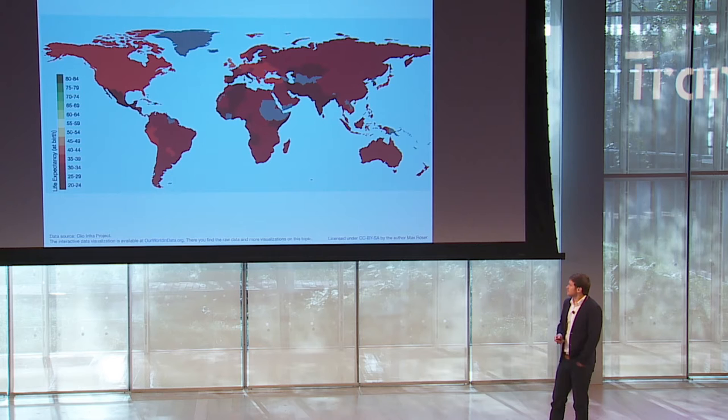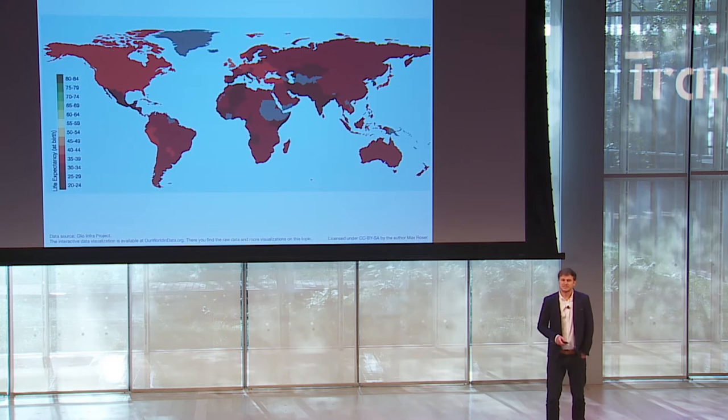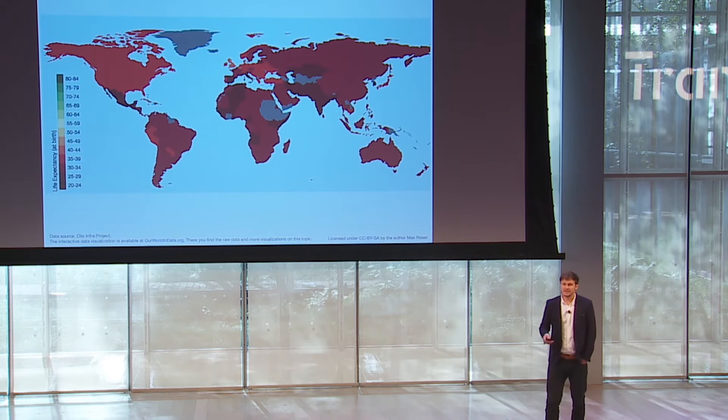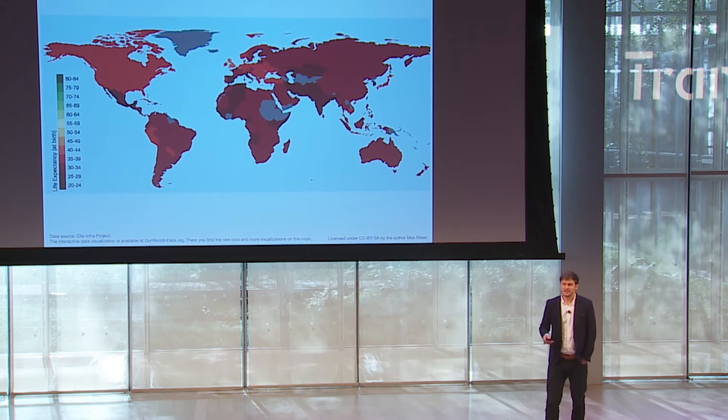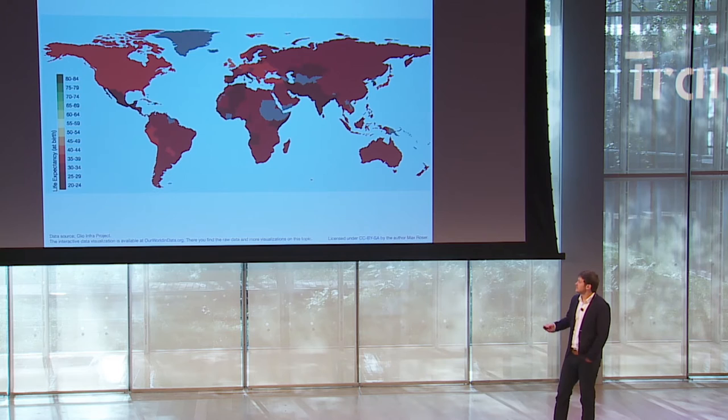Another aspect to focus on instead of incomes — something more easily comparable — is health. This world map shows estimates for life expectancy back in 1800. Life expectancy is very low. The dark red countries have a life expectancy in the low 20s, 20 to 25 years, all shown in modern country borders, and the lighter red colors are in the 30s. But no country in the world has a life expectancy above 40 back in 1800.